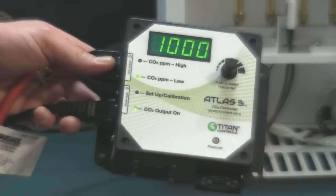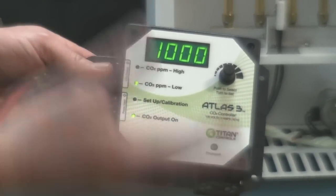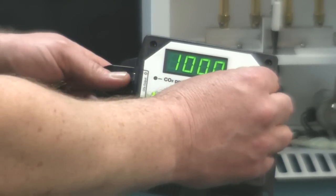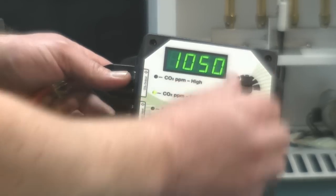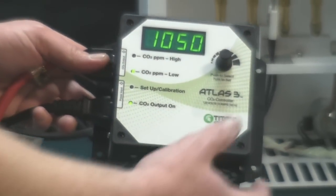The next thing I want to do is set my low number. This is when it's going to activate at the low end. So I'm going to set that at 1,050, that will give me a 200 parts per million hysteresis.